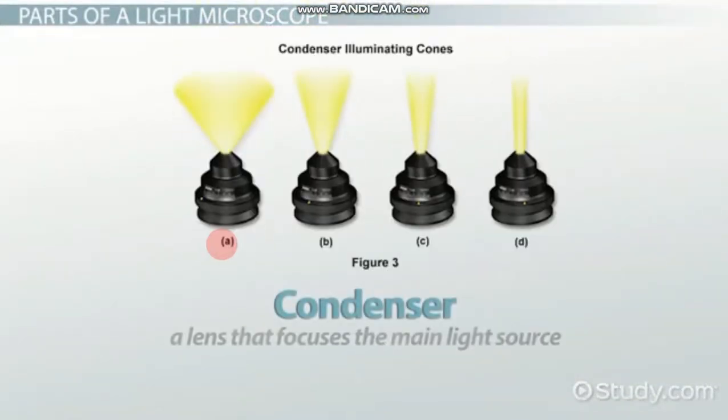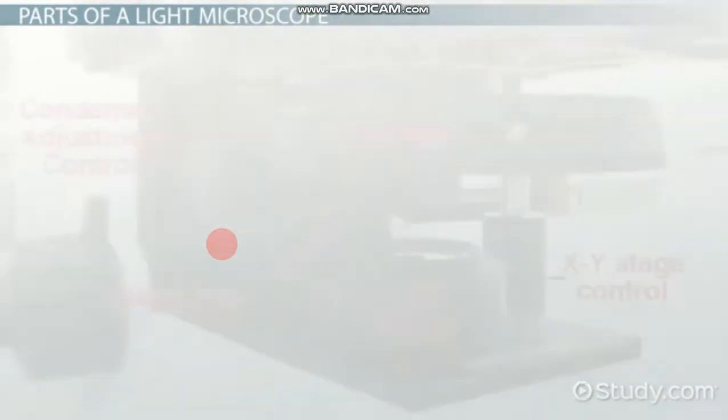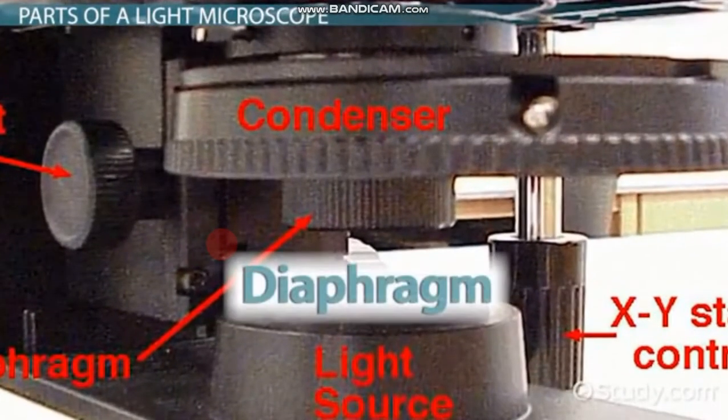The condenser is a lens that focuses the main light source through the sample and into the objective lens. The user can adjust the light focusing with the diaphragm.